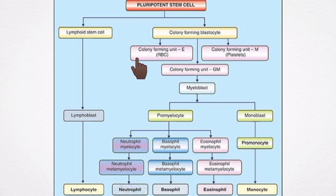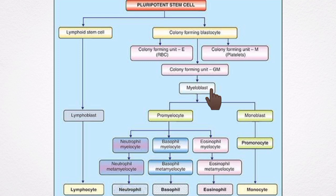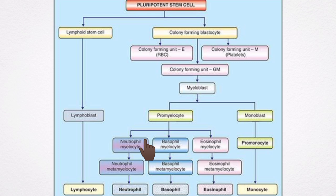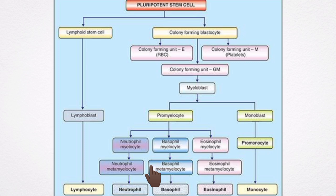The colony-forming unit erythrocytes gives rise to erythrocytes, while the colony-forming unit megakaryocytes gives rise to platelets. The colony-forming units granulocytes and monocytes gives rise to myeloblasts. The myeloblasts give rise to promyelocytes and monoblasts. The monoblasts give rise to monocytes. The promyelocytes give rise to eosinophil myelocytes and neutrophil metamyelocytes, which eventually give rise to their respective mature granulocyte cell types.